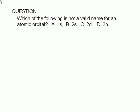Which of the following is not a valid name for an atomic orbital? A, 1s, B, 2s, C, 2d, or D, 3p?